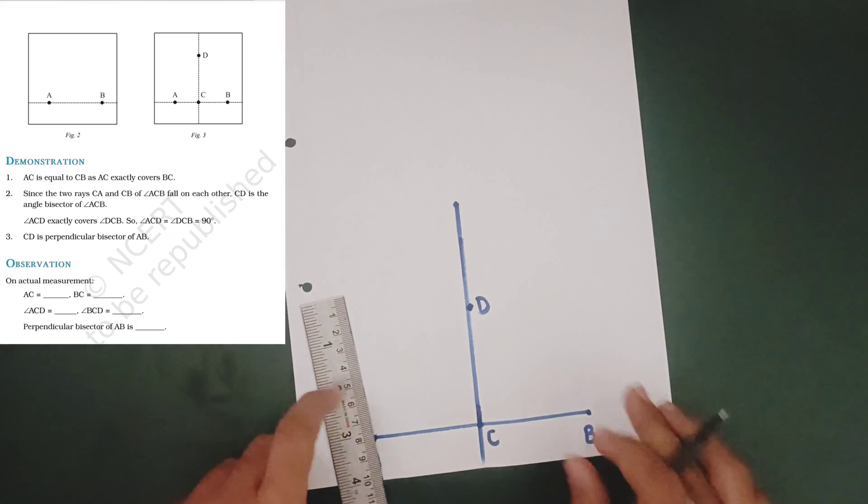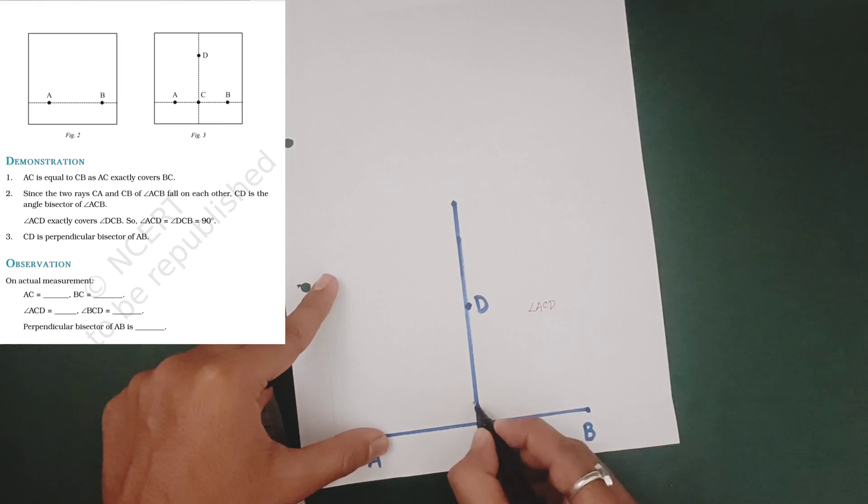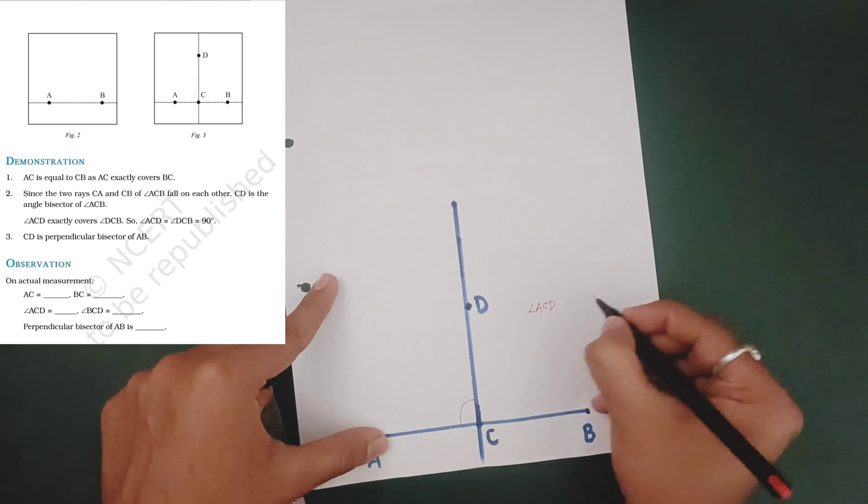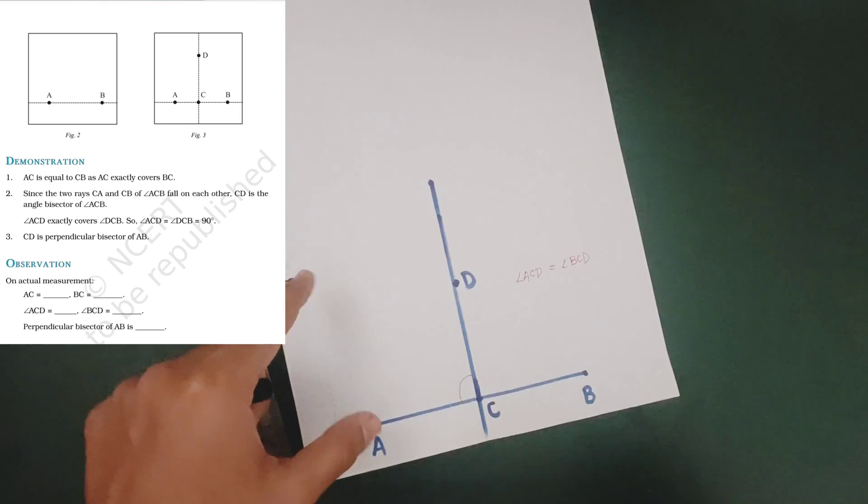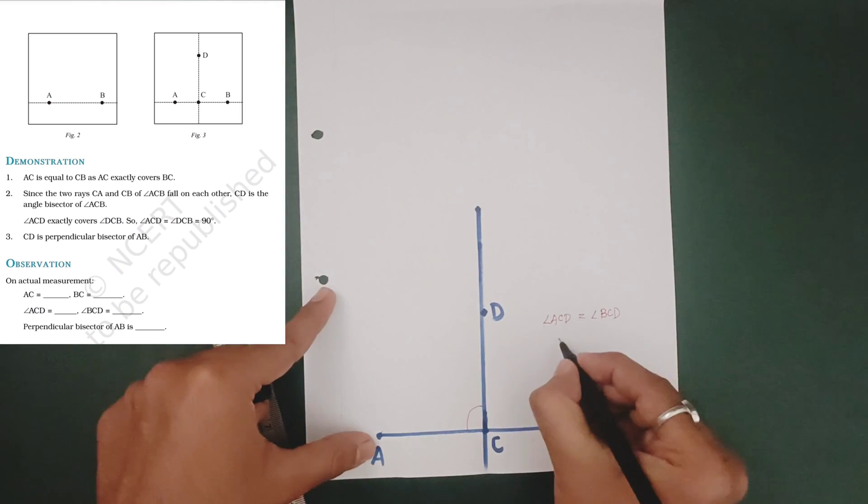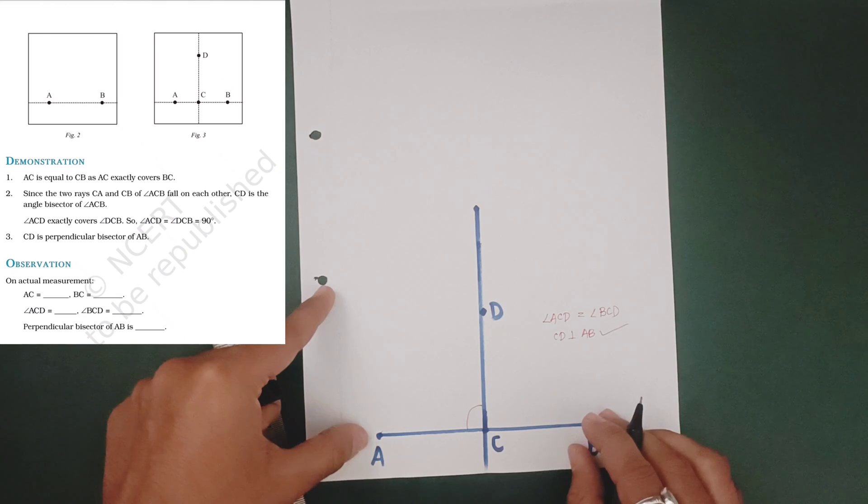Angle ACD is equal to angle BCD, so CD is the perpendicular bisector of line AB. Hence proved, clear.